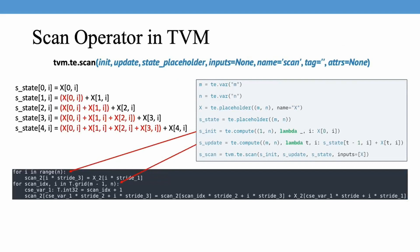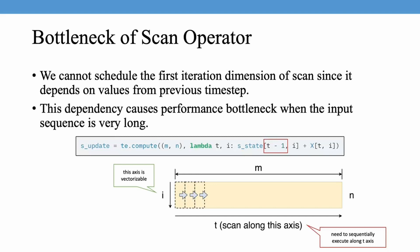The scan operator in TVM is an operator that performs computation along a specific axis. Here is an example of using scan to compute cumulative sum. The bottleneck of scan is that we cannot schedule the first iteration dimension since it depends on results from the previous time step. In a diagram, we can see that computation on the t-axis has dependency on previous iterations, which forces sequential execution along the t-axis, causing severe performance bottleneck when the input sequence is very long.